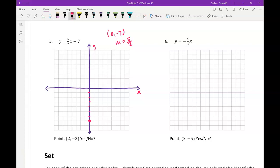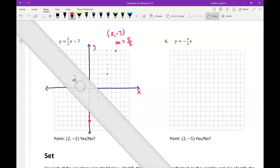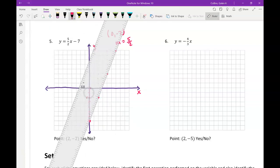And I'm going to rise up 1, 2, 3, 4, 5, and run over 2. You could also go down and backwards, like down 5 and to the left 2. But I didn't leave myself enough space to do that on this graph.